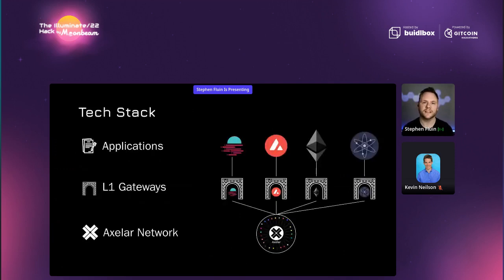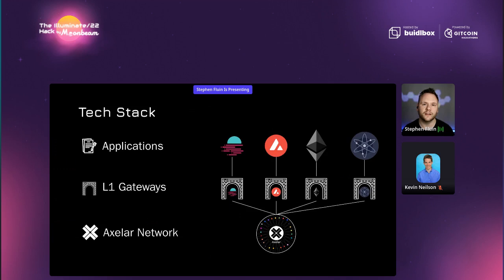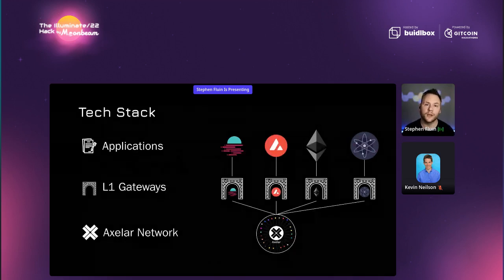I want to cover the Axelar tech stack and what it feels like for a developer. At a high level, you've got applications that you'll be building and shipping on blockchains via smart contracts — whether that's Moonbeam or whatever blockchain you want to interact with. On these EVM chains, you'll see gateways, which are the contracts that form the API for the blockchain: the contract that will call you when you receive a message, and the contract you'll interact with when sending a message or tokens. The Axelar network — this decentralized blockchain — watches and monitors all those gateways to facilitate the sending and receiving of all messages.